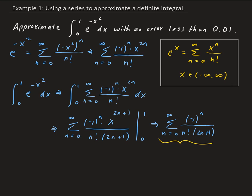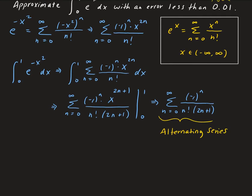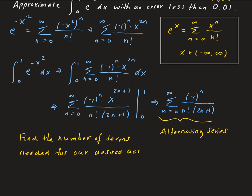This is the series that will generate the solution. From here we need to determine the number of terms. We are given that the error should be less than 0.01. The series we have is an alternating series, so we need to find the number of terms for our desired accuracy — we want the error to be less than 0.01.